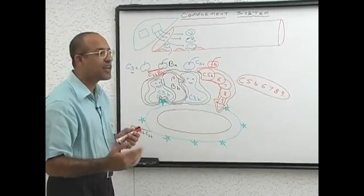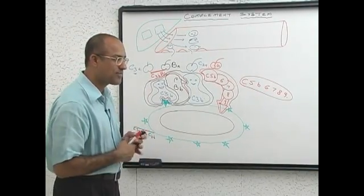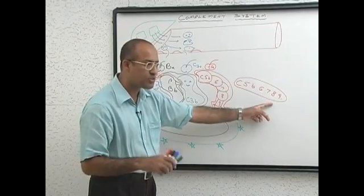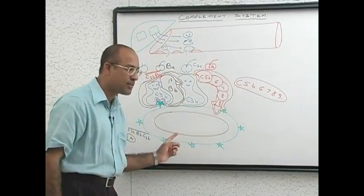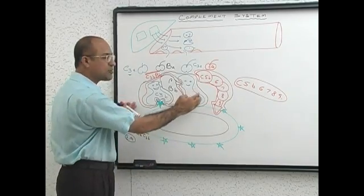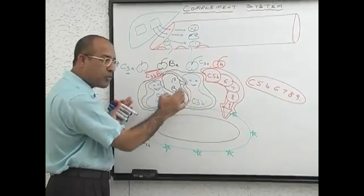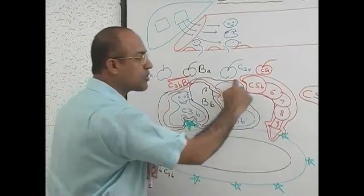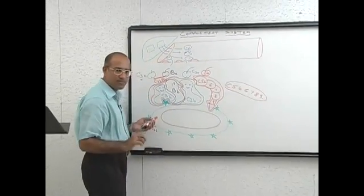So this is called final common pathway. C5B, 6, 7, 8, 9 was present in the previous pathway as well as in this pathway. So this is final common pathway in both activation. But initial steps are different. Am I clear?